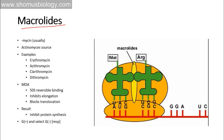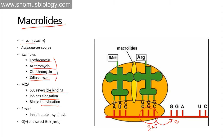Macrolides — you can identify them by the 'mycin' suffix — include erythromycin, azithromycin, clarithromycin, and dirithromycin. Their mode of action involves reversible binding to the 50s subunit, inhibiting elongation and blocking the translocation process. Macrolides bind the 50s subunit in a way that prevents the tRNA from reading the mRNA codon and progressing from one codon unit to the next, thus preventing protein synthesis.